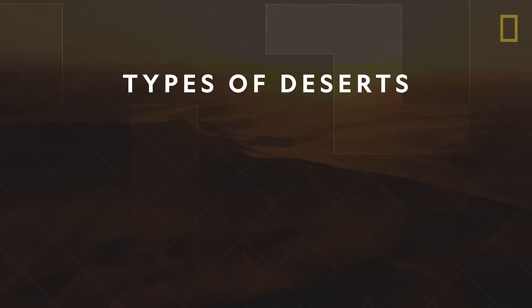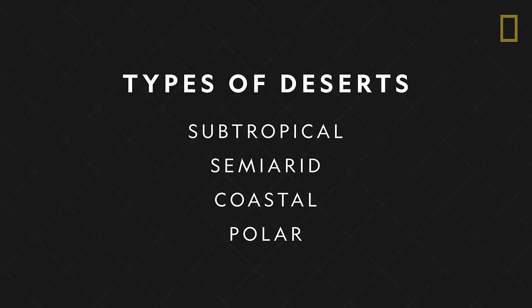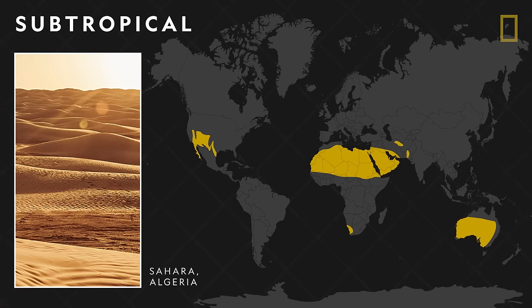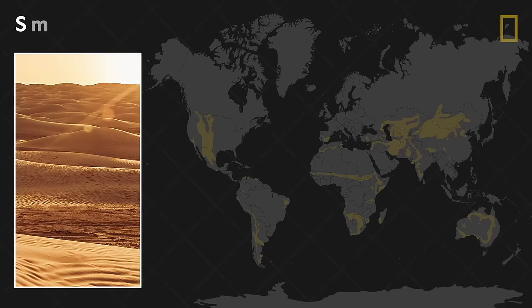Deserts are sometimes classified into four major types: subtropical, semi-arid, coastal, and polar. Subtropical deserts are found along the equator in the Tropic of Cancer and the Tropic of Capricorn. They are the hottest deserts on Earth, with daytime temperatures that can reach up to 120 degrees Fahrenheit.